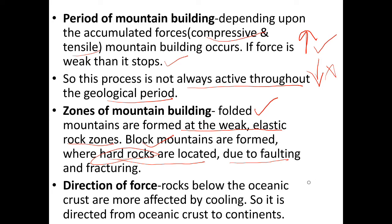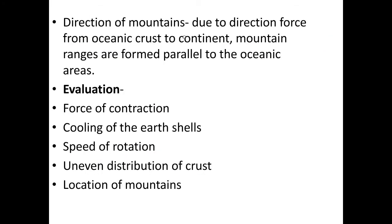Rocks below the oceanic crust are more affected by cooling because the radius of the oceanic crust is less compared to the continental crust, so it is much more affected by the cooling process. Due to the direction of force from oceanic crust to continent, mountain ranges are formed parallel to oceanic areas — for example, the Rockies are formed parallel to these oceanic areas.